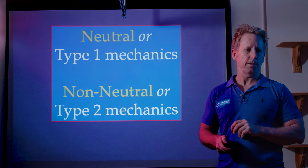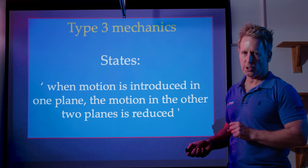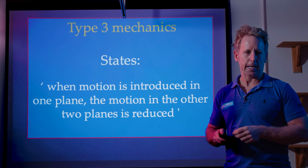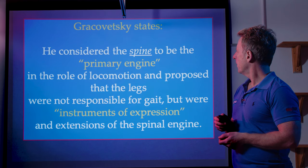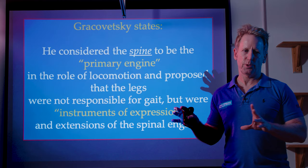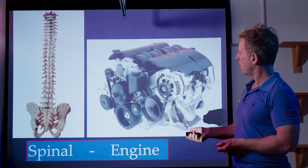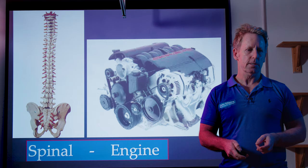There is also a Type 3, introduced by Nelson in 1948. Nelson states that when motion is introduced in one plane, motion in the other two planes is reduced. For instance, if you're in extension and then try to side bend or rotate, it becomes more difficult — that is a Type 3 mechanic. Gracovetsky stated that he considered the spine to be the primary engine in the role of locomotion, and that the arms and legs are instruments of expression. He uses the term 'spinal engine,' and he does have a video demonstrating this concept.